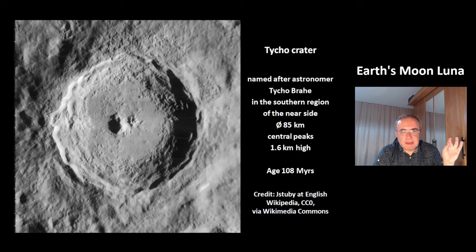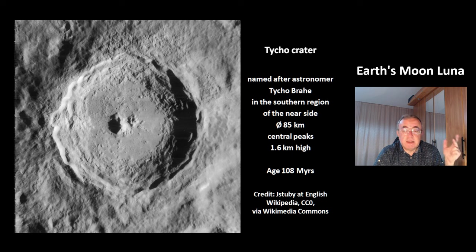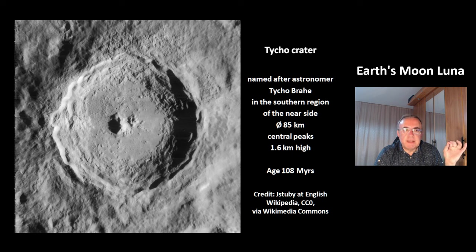This is the Tycho Crater, named after astronomer Tycho Brahe. It is located in the southern region of the near side, has a size of 85 km, and the central peaks have a height of up to 1.6 km. The age of this crater is 108 million years.